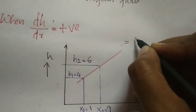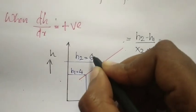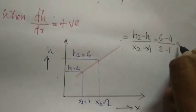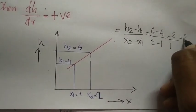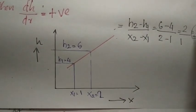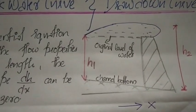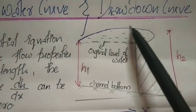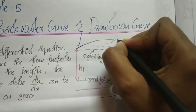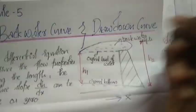When dh/dx is positive: the change in length gives h2 minus h1 by x2 minus x1, that is 6 minus 4 by 2 minus 1, which equals 2 by 1, equal to 2 — which is positive. So dh/dx is positive. This is gradually varied flow. This profile is called the backwater curve.